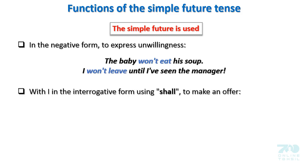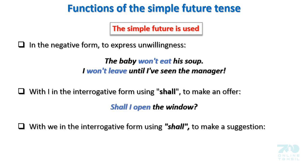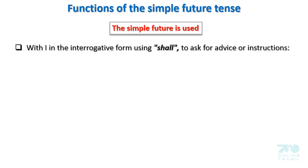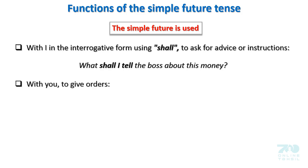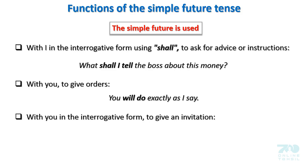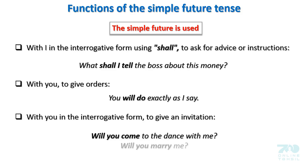With I in the interrogative form using shall, to make an offer: 'Shall I open the window?' With we in the interrogative form using shall, to make a suggestion: 'Shall we go to the cinema tonight?' With I in the interrogative form using shall, to ask for advice or instructions: 'What shall I tell the boss about this money?' With you, to give orders: 'You will do exactly as I say.' With you in the interrogative form, to give an invitation: 'Will you come to the dance with me?' 'Will you marry me?'